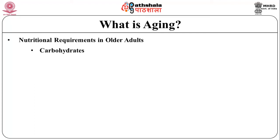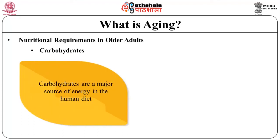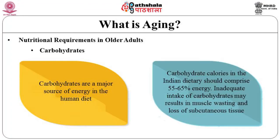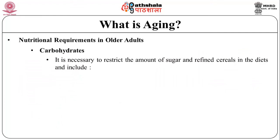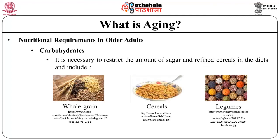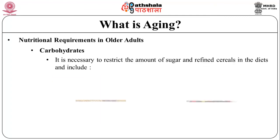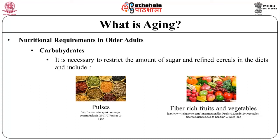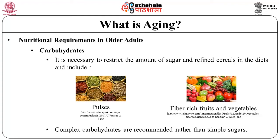Carbohydrates are a major source of energy in the human diet, and carbohydrate calories in the Indian diet should comprise 55 to 65 percent of energy. Inadequate intake of carbohydrates may result in muscle wasting and loss of subcutaneous tissues. It is necessary to restrict sugar and refined cereals and include whole grain cereals, legumes, pulses, fiber-rich food, and vegetables. Complex carbohydrates are recommended rather than simple sugars.